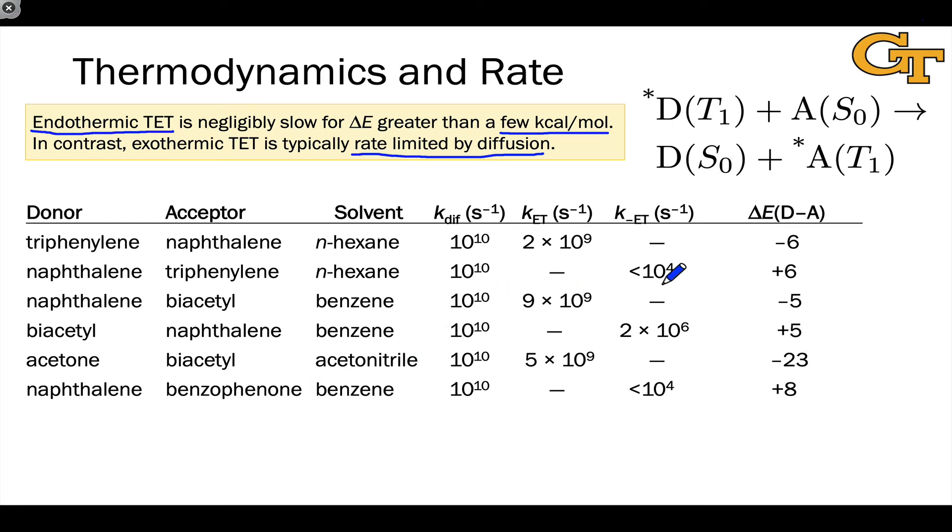We can see, for example, in this data that for all of the exothermic cases of energy transfer, anywhere where delta E DA is less than 0, negative 6, negative 5, negative 23, the rate of energy transfer is extremely rapid and on the order of diffusion.